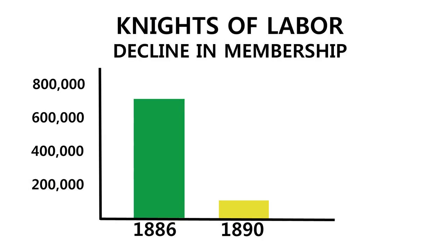From a high of about 700,000 members in 1886, the Knights dwindled to only 100,000 by 1890.